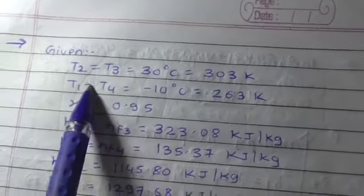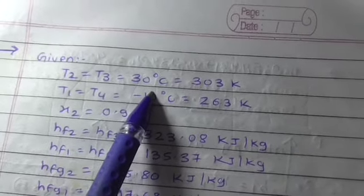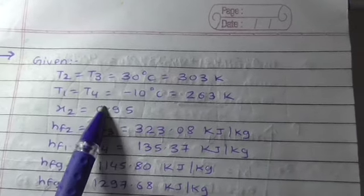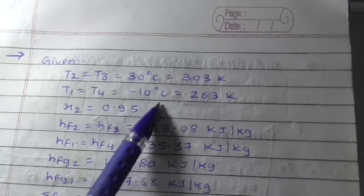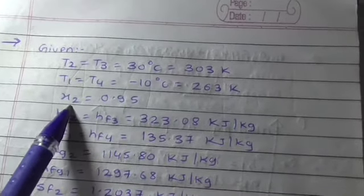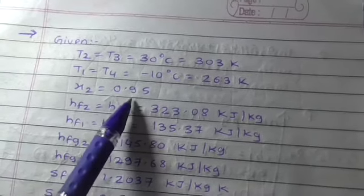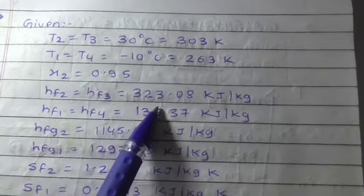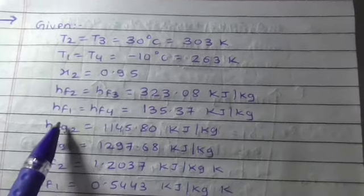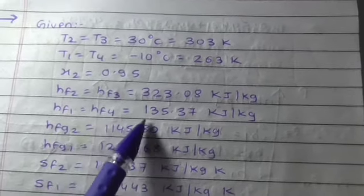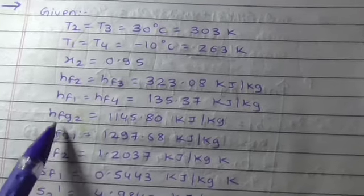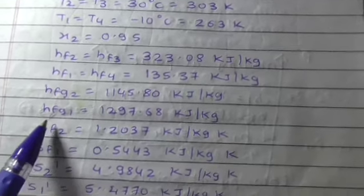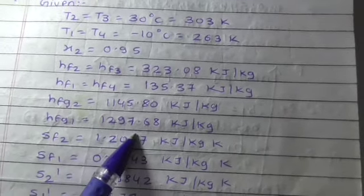Given: T2 equals T3 equals 30 degrees Celsius, that is condenser temperature, so 303 Kelvin. T1 equals T4 equals minus 10 degrees Celsius, so 263 Kelvin. X2 equals 0.95. HF2 equals HF3 equals 323.08. HF1 equals 135.37. Latent heat HFG2 equals 1145.80, HFG1 equals 1297.68.